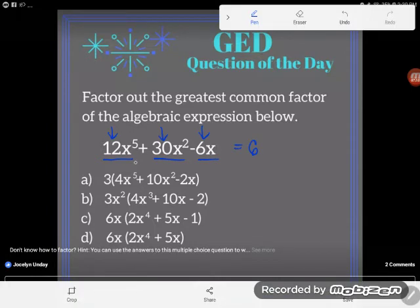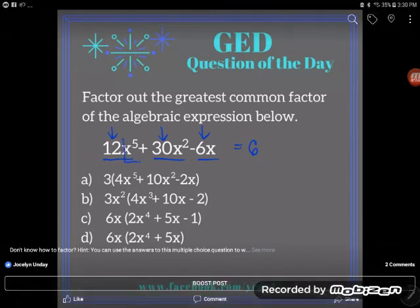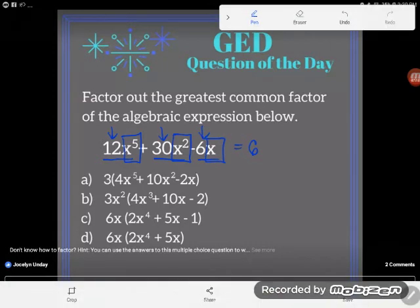Okay, now notice the variable portion of these numbers, of these terms. Every single one of these terms has an x. Now what's the largest number of x's that I could divide out of all of them?